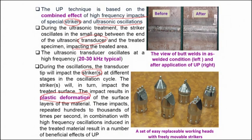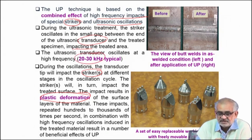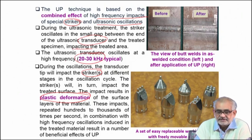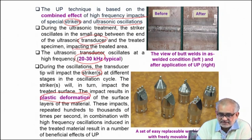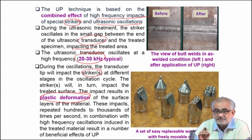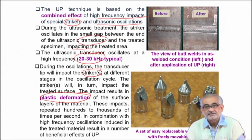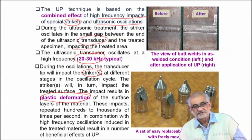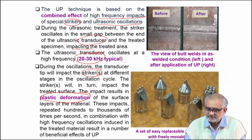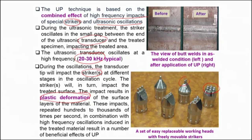The typical frequency at which these ultrasonic transducers or generators operate is a few tens of kilohertz. At this very high frequency, the impacts create a deformation zone confined to a limited area and limited depth, but it is very effective in creating a reasonable amount of deformation and plastic strain below the surface. There are various types of replaceable heads used in this process.